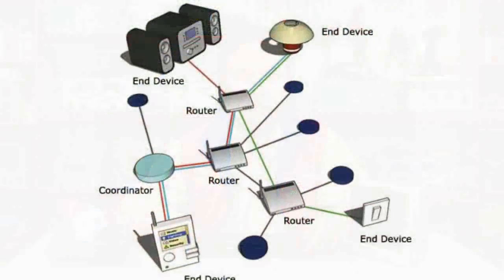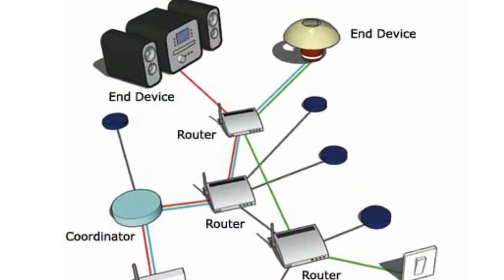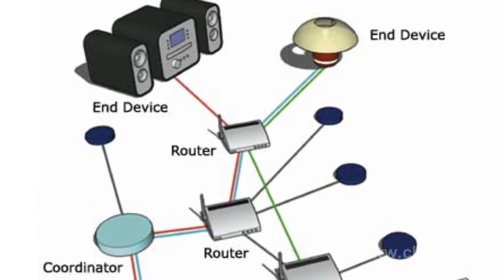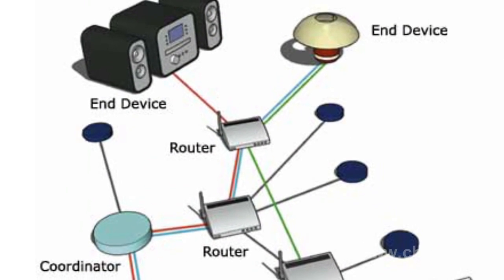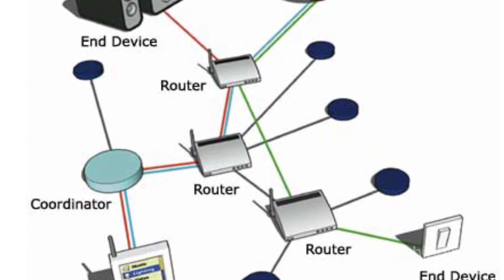ZigBee is a technology of data transfer in wireless networks. It has low energy consumption and is designed for multi-channel control systems, alarm systems and lighting control. It also has other various home and industry applications.